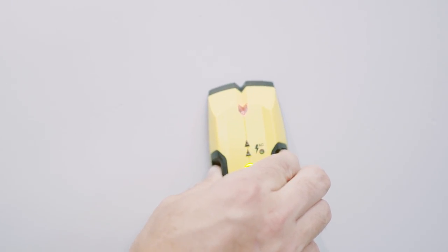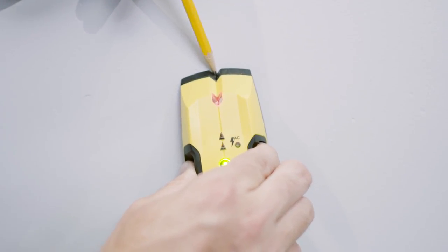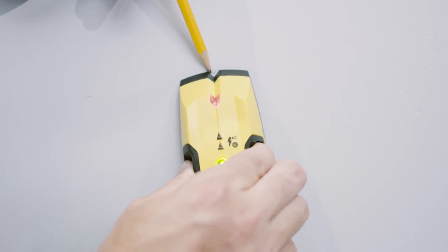Now, locate and mark at least two studs you can mount to. An inexpensive electronic stud finder makes this easy.